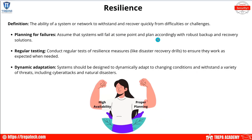We're going to finish up Domain 3.1, going over the different types of architecture models. Resilience — the ability of a system or network to withstand and recover quickly from difficulties or challenges. When talking about cyber security resilience, we could be talking about things like load balancing and data replication.